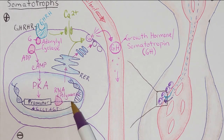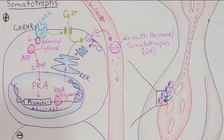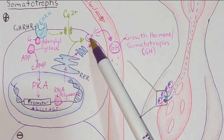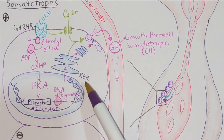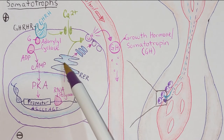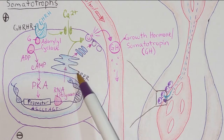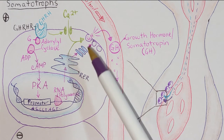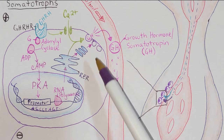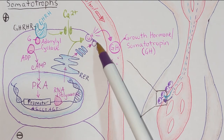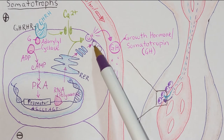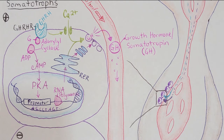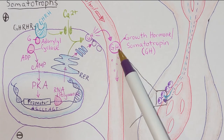The gene being expressed in response to growth hormone releasing hormone is none other than growth hormone itself. Transcription occurs in the nucleus, translation within the cytoplasm, post-translational processing in the rough endoplasmic reticulum and the Golgi apparatus, and finally the Golgi apparatus creates vesicles which are lined up at the membrane of the cell, just waiting for a stimulus to release the growth hormone via exocytosis into the blood.